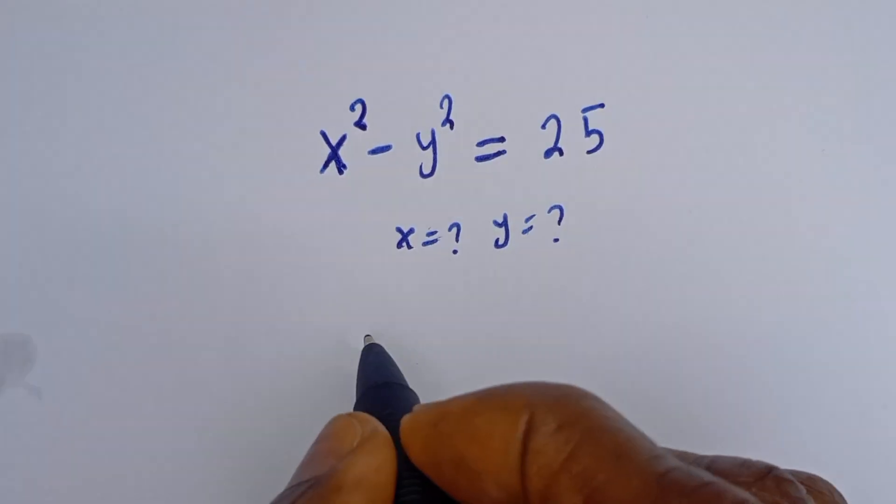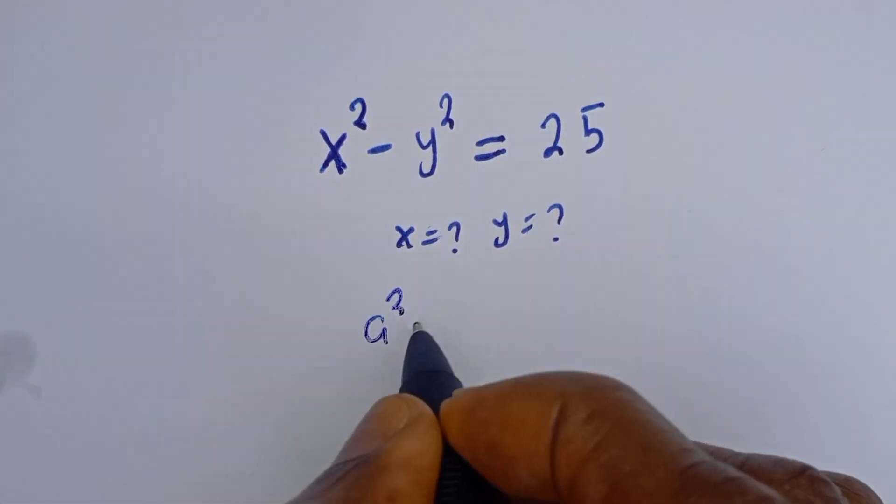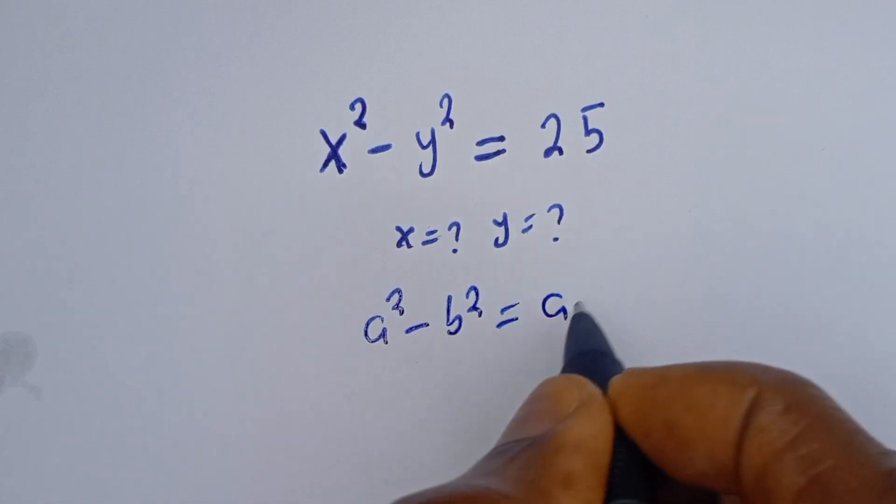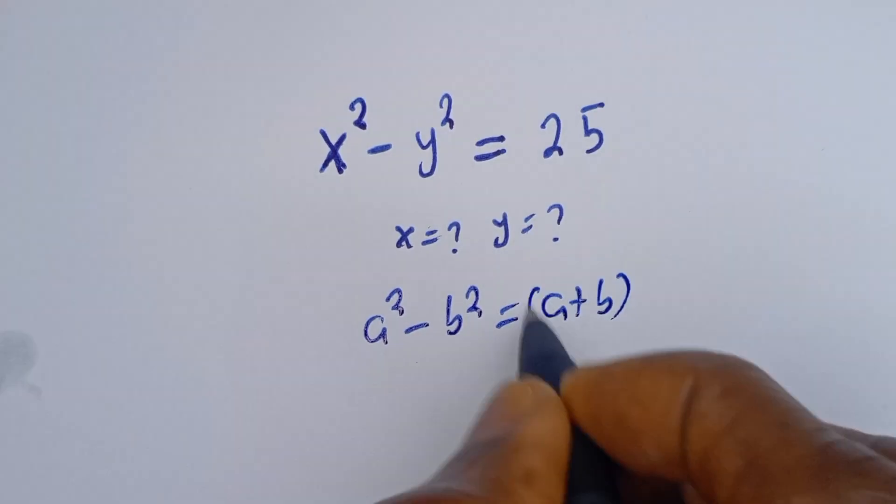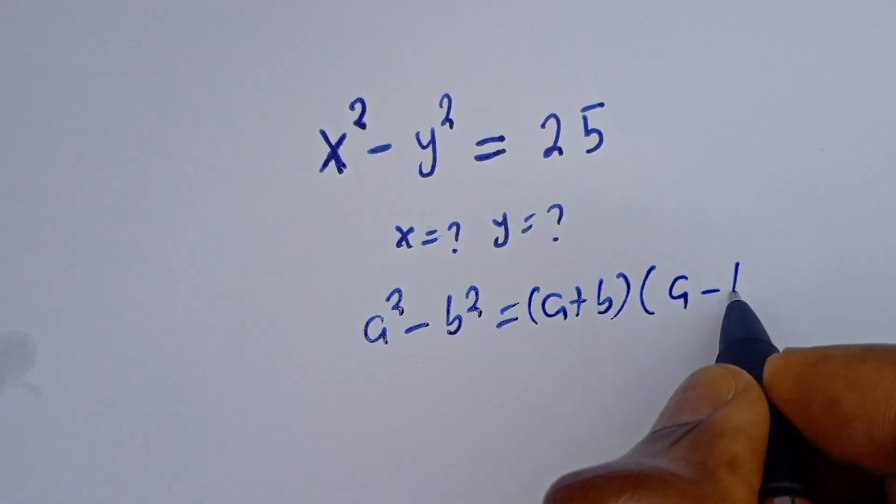Now take note of this: if you have A squared minus B squared, this is equal to A plus B times A minus B.